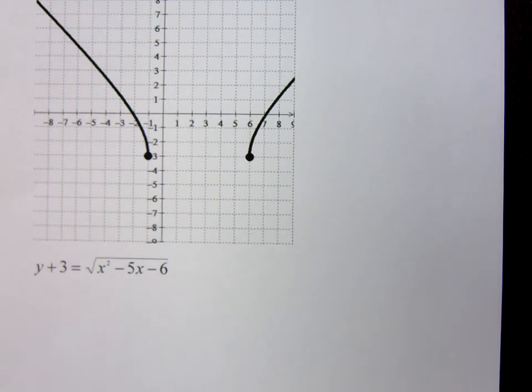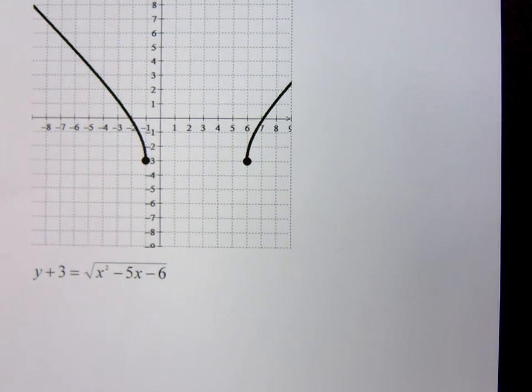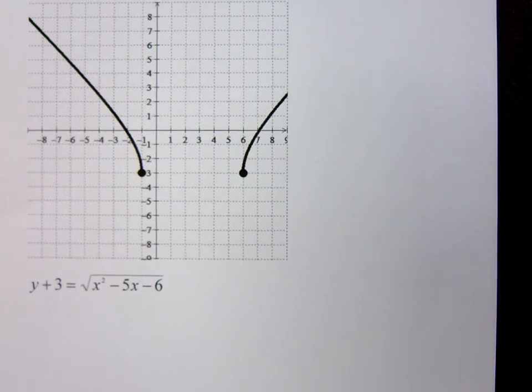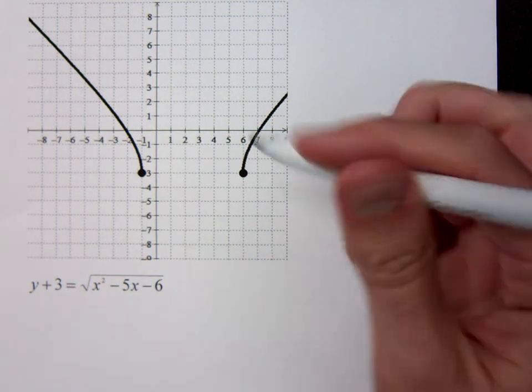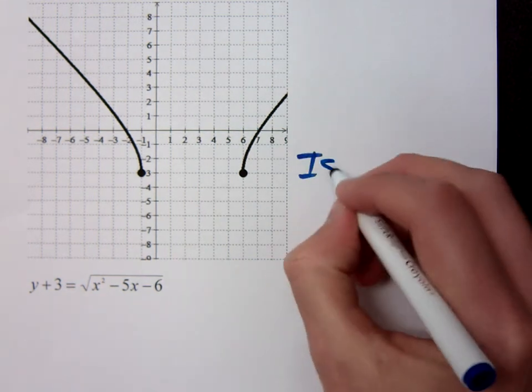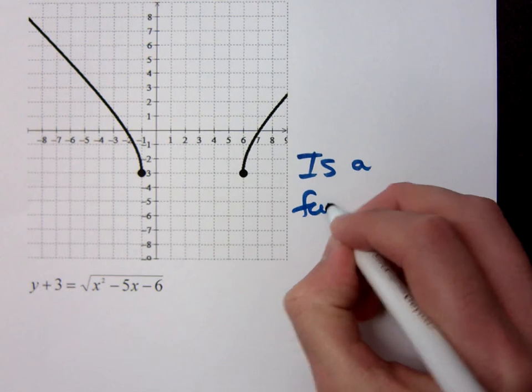Let's take a look at this graph. Does this guy represent a function? Yes. Now, if you say it doesn't, you should be able to draw a vertical line that would go through more than one point, but I can't do that here. So this does seem to be a function, so this guy is a function.